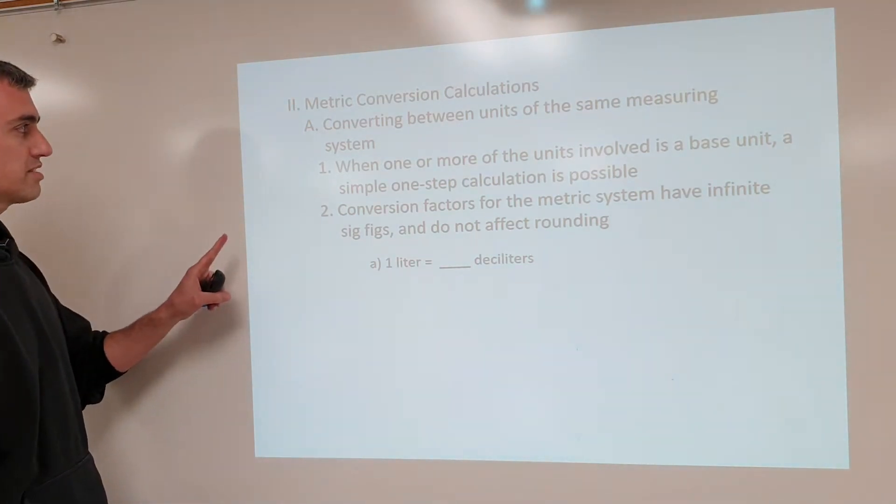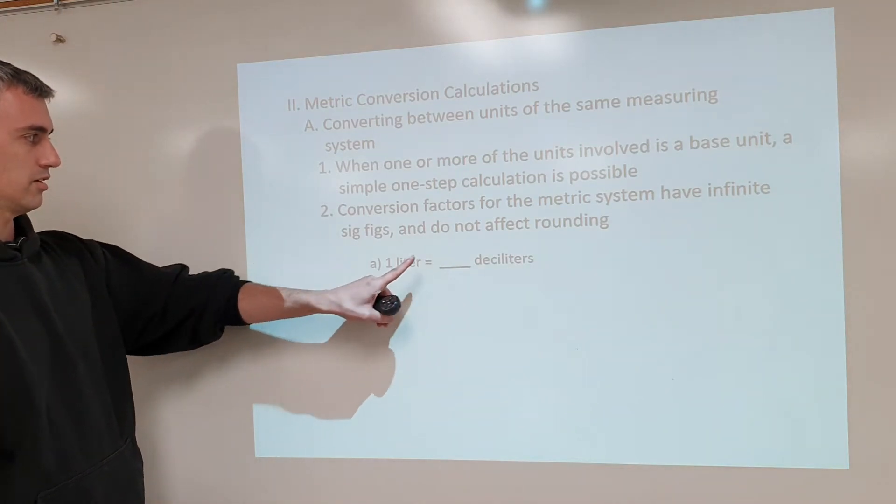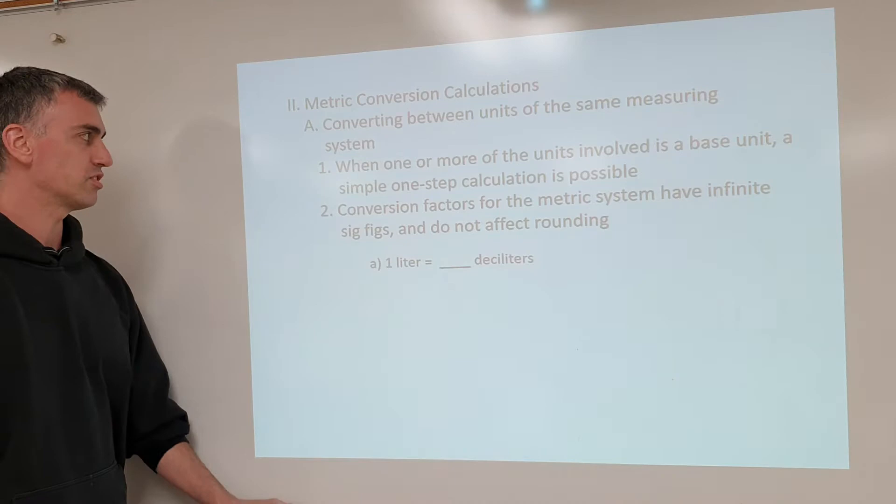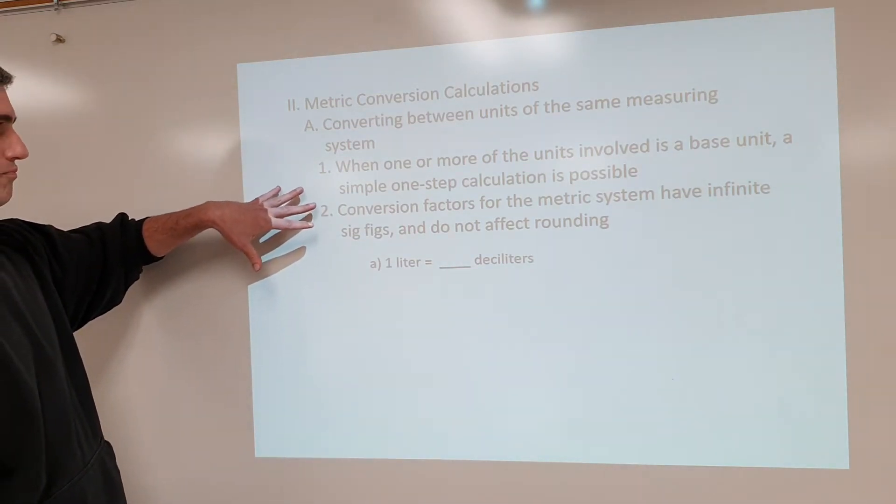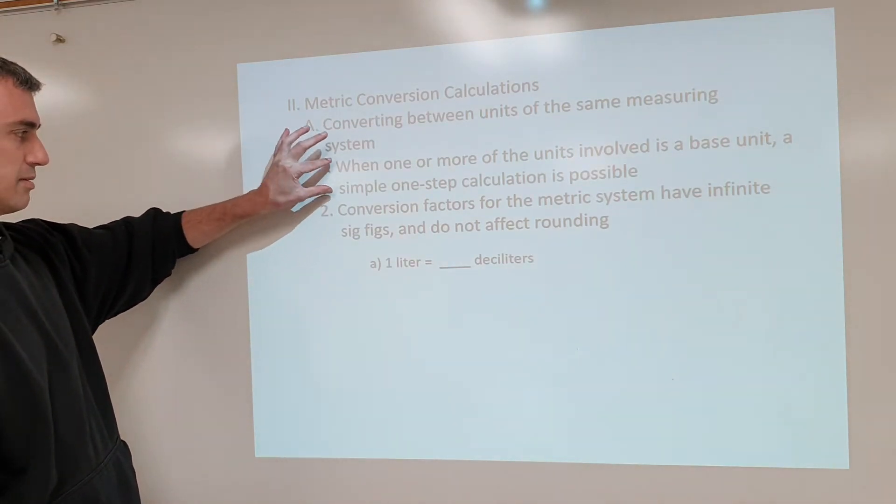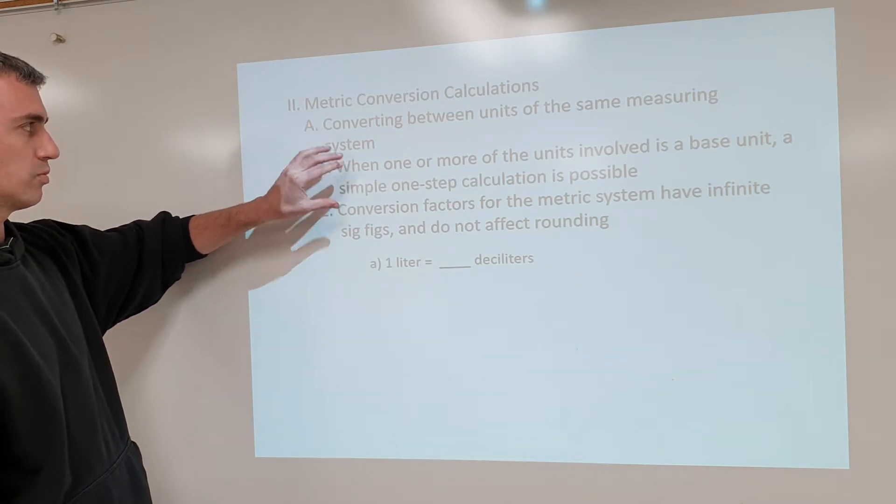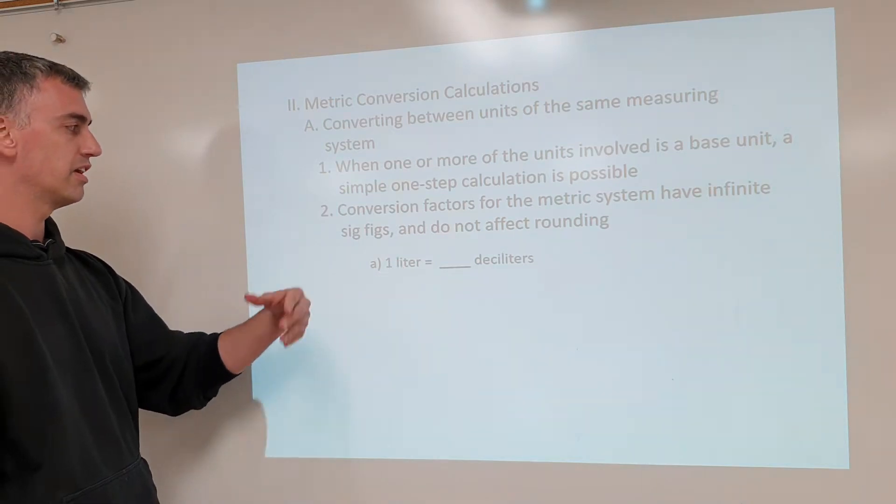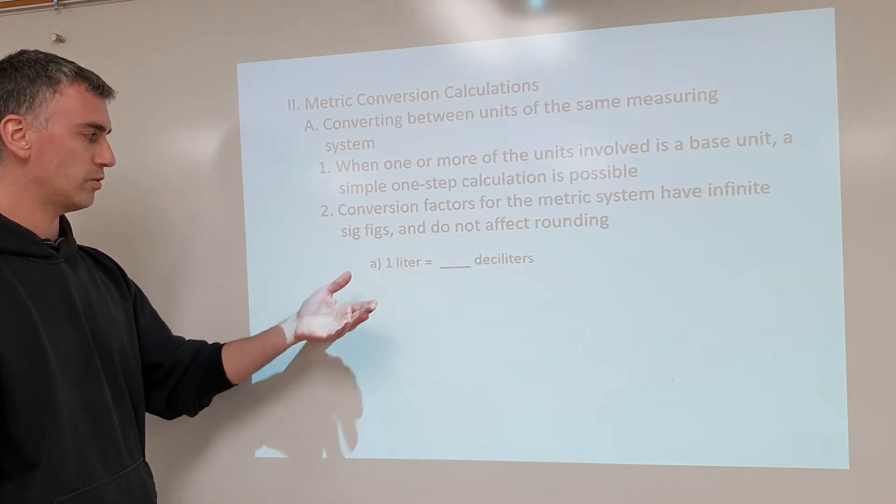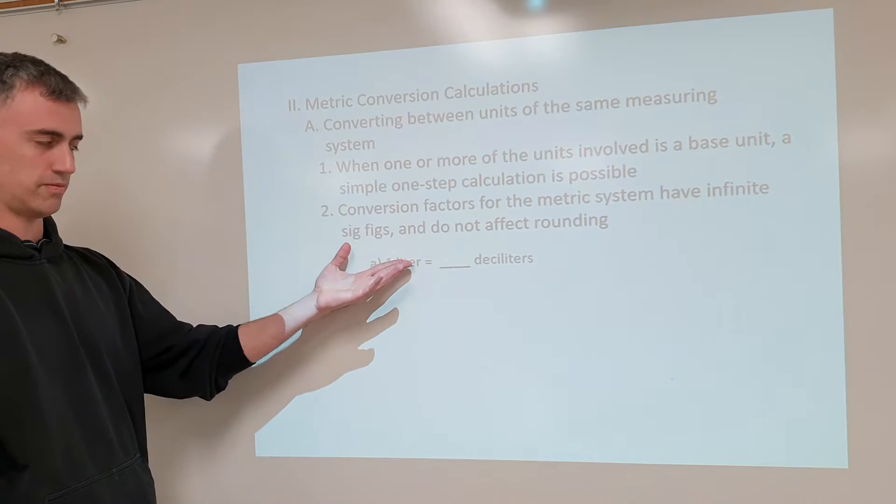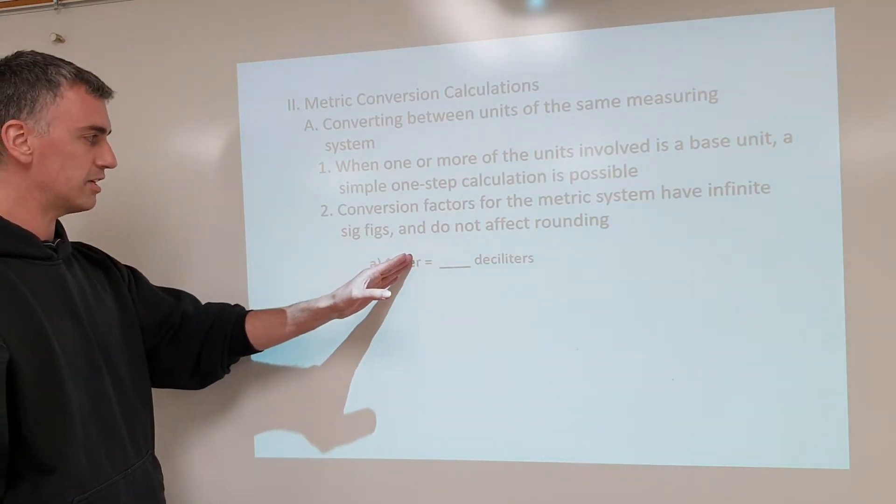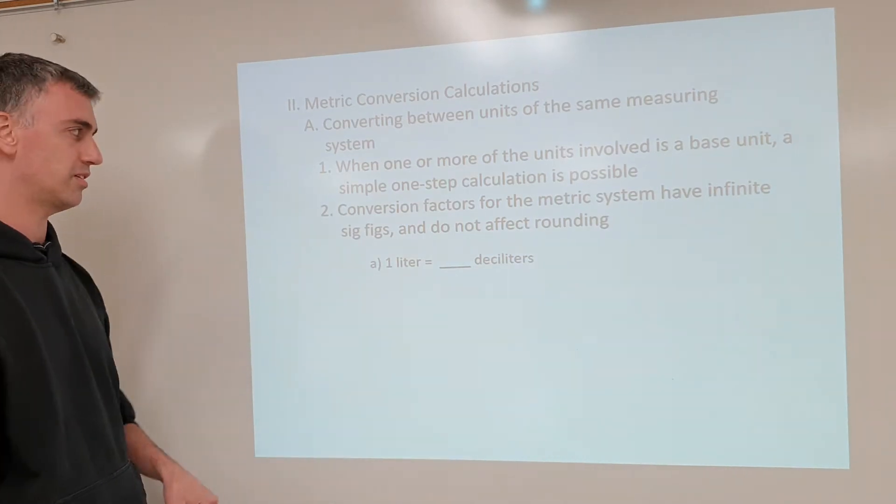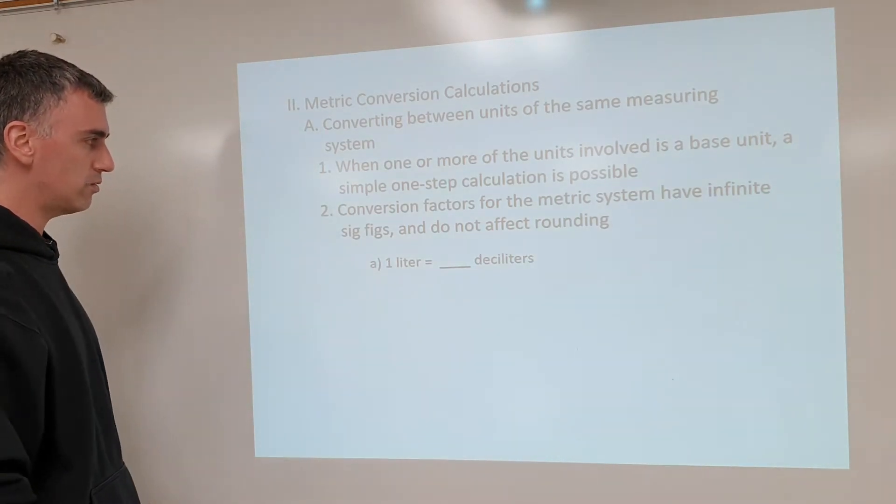So, with this, let's begin. One liter equals a certain number of deciliters. So, how are we going to go about doing this? Well, you'll notice it's giving you some information here. A simple one-step calculation, because one of these is a base unit. Okay, this is what we call a base unit. It's the unit that it's all based on. It can have kilo or deci or micro or whatever liters, but it's all some version of liters. This is a base unit right here.